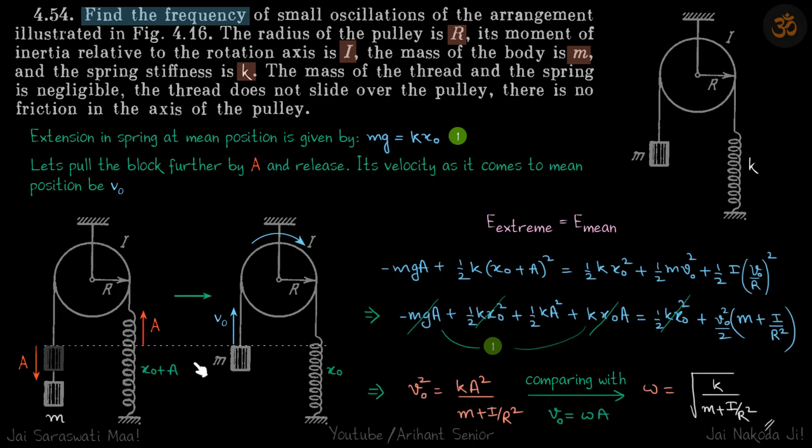This directly gives ω = √[k/(m + I/r²)].